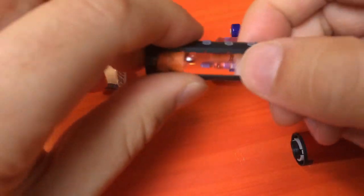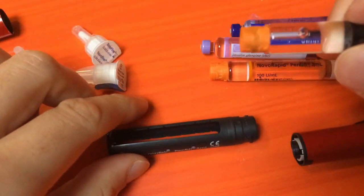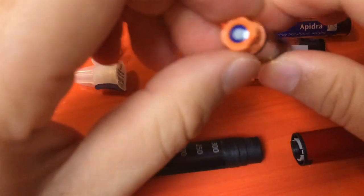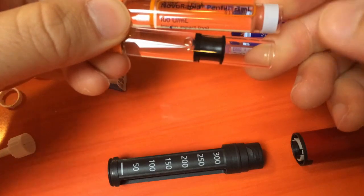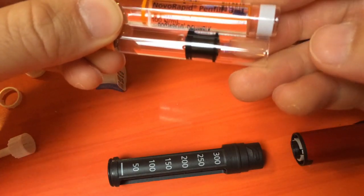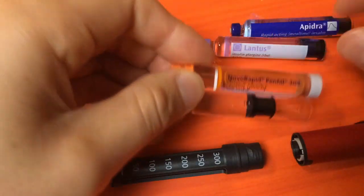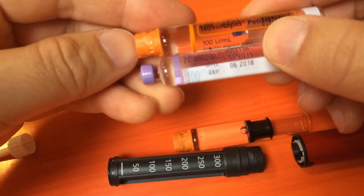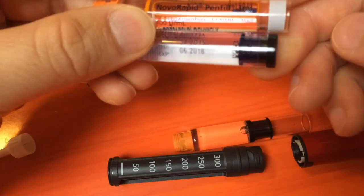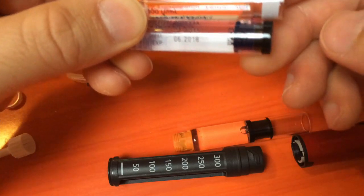This one is an Apidra vial. As you can see, the difference in size is what makes it not work. It's slightly shorter, and the same with Lantus. When lined up on one end, it's about 2-3mm shorter on the other end.